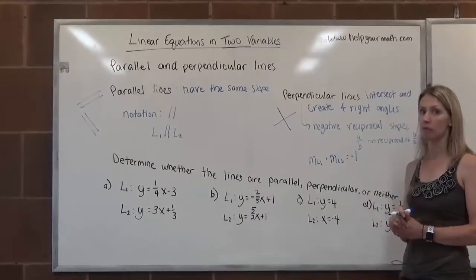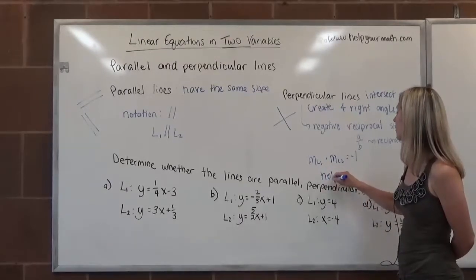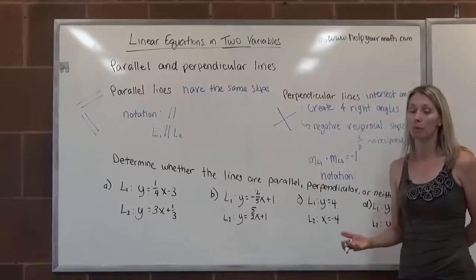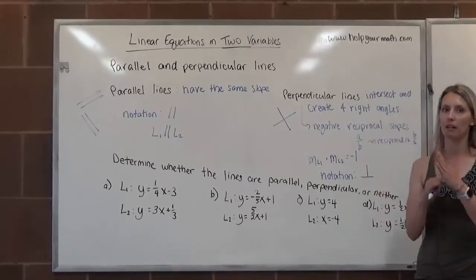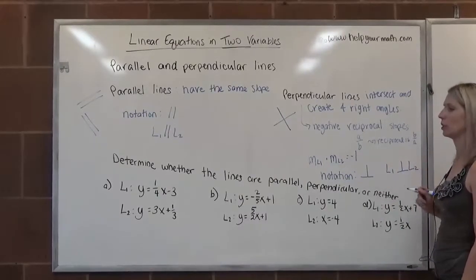That's the same thing as saying that they are negative reciprocals. Notation for perpendicular: so if we want to write that two lines are perpendicular without writing the word perpendicular, it's like an upside down T. You basically create perpendicular line segments. So we could say line one is perpendicular to line two.